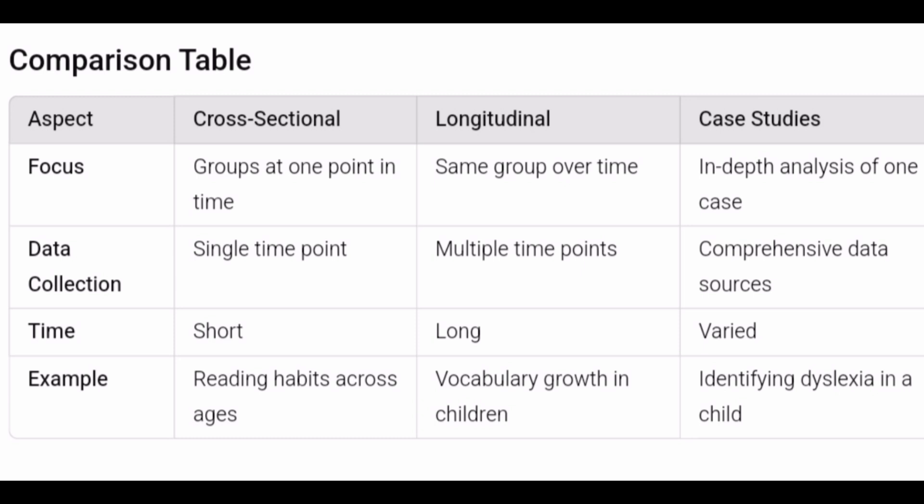Examples in the comparison: cross-sectional study example is reading habits across ages — how children of 6, 10, 14, and 15 years differ in their reading interests. Longitudinal study example is vocabulary growth in children — tracking a child from age 6, then 10, then 15, observing how vocabulary develops over time. Case study example is identifying dyslexia in a child.